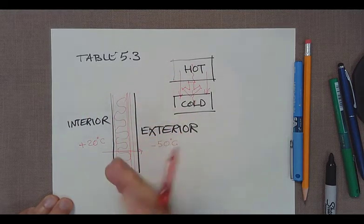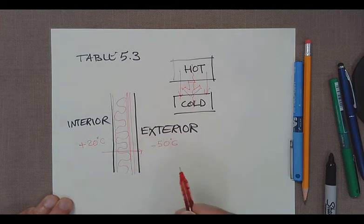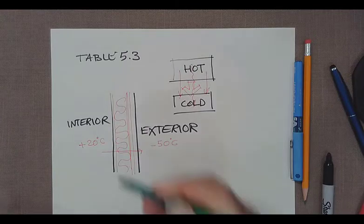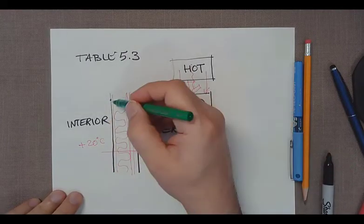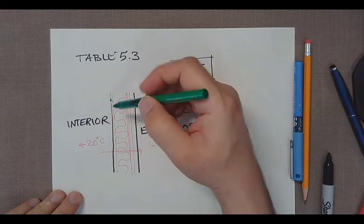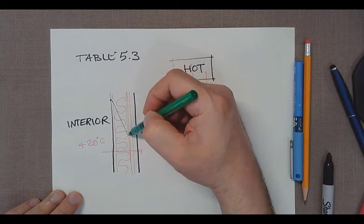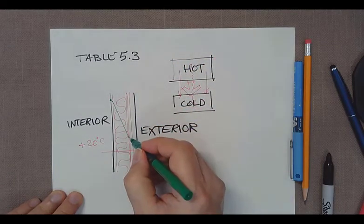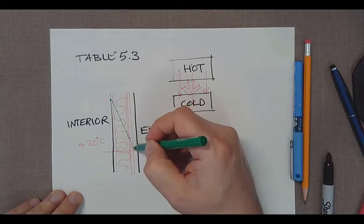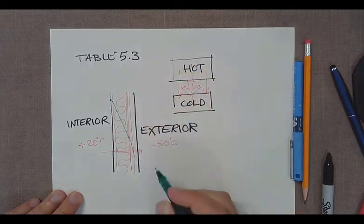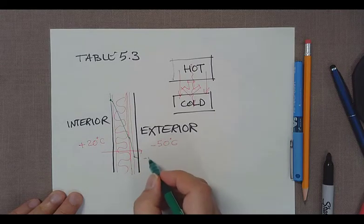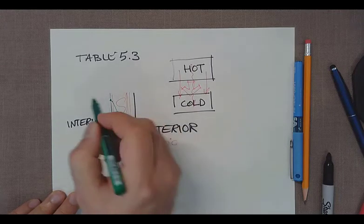So the temperature from inside starts from a point, goes a little bit below, and goes drastically below because this is the insulation. And again a little bit below, and then again drastically below because this is another layer of insulation, and eventually goes out to minus 50 degrees Celsius.